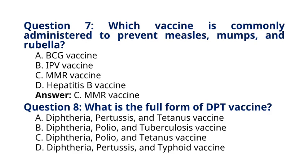Question 8. What is the full form of DPT vaccine? A. Diphtheria, Pertussis, and Tetanus vaccine. B. Diphtheria, Polio, and Tuberculosis vaccine. C. Diphtheria, Polio, and Tetanus vaccine. D. Diphtheria, Pertussis, and Typhoid vaccine. The correct answer to question 8 is option A, Diphtheria, Pertussis, and Tetanus vaccine. The DPT vaccine provides immunity against diphtheria, pertussis (whooping cough), and tetanus.